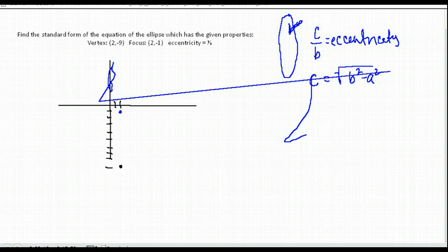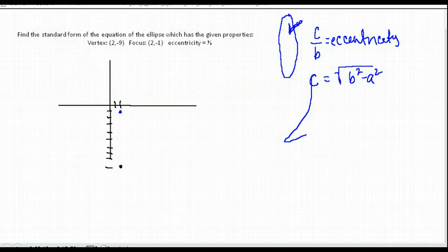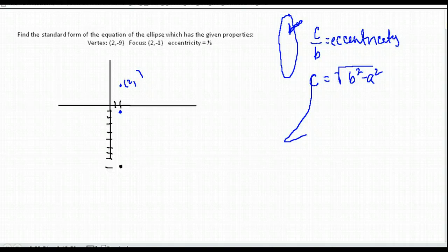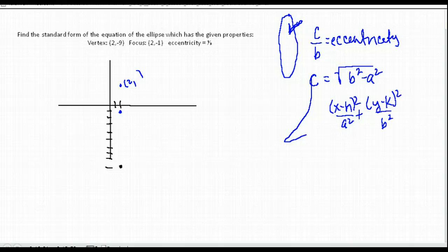We probably have a center somewhere above our given points, and we know the x-coordinate of the center is going to be 2. Our standard form will look like: (x − h)² / a² + (y − k)² / b² = 1.